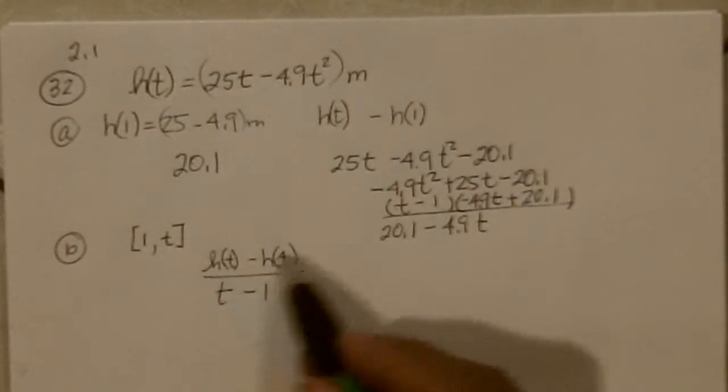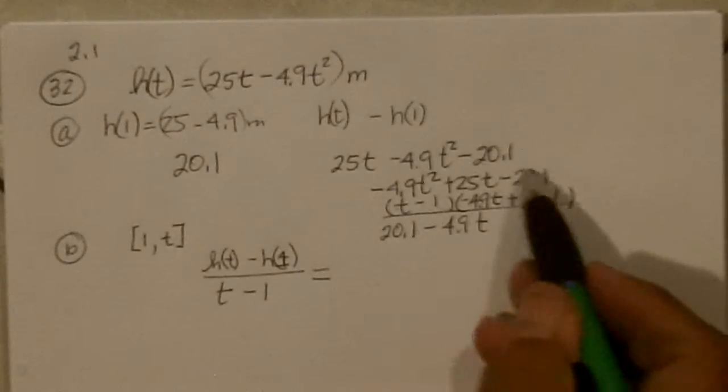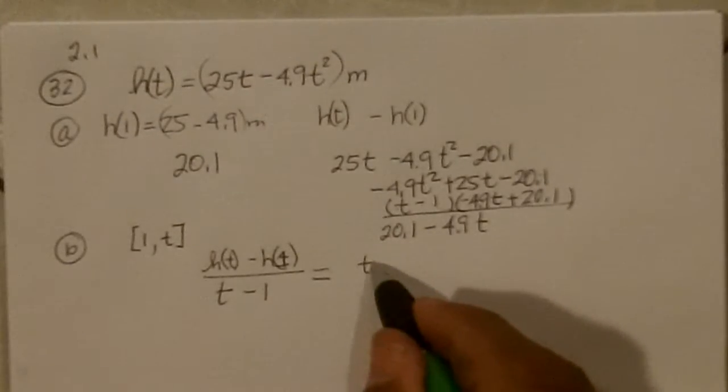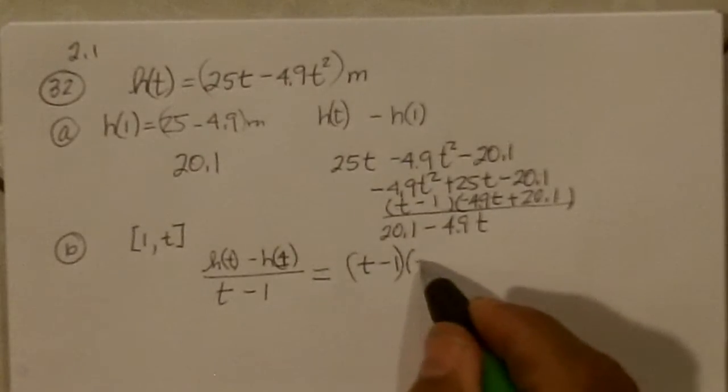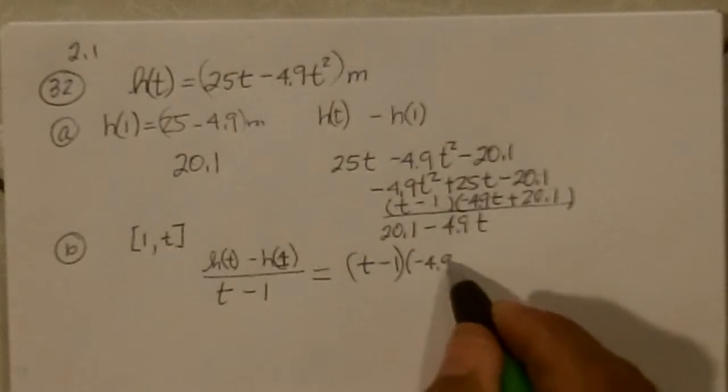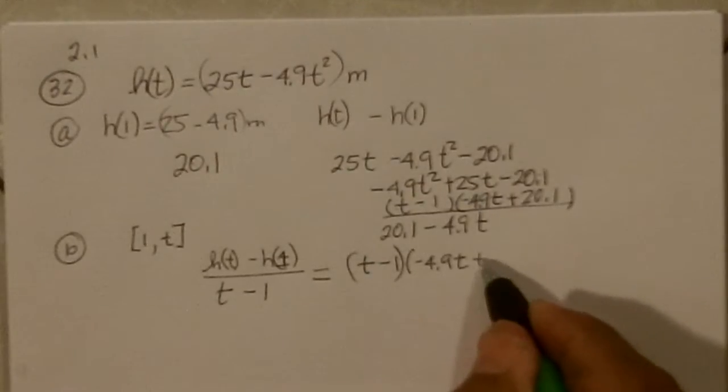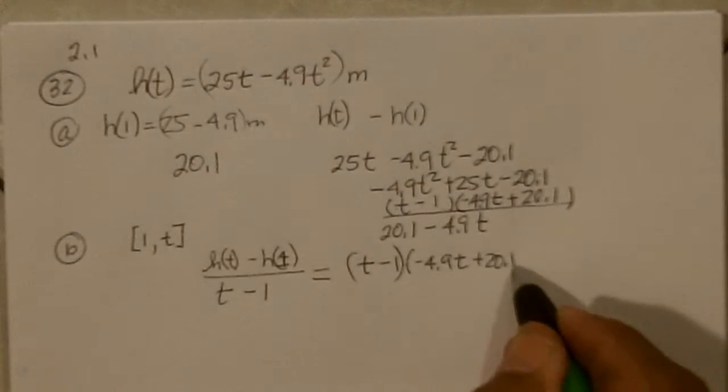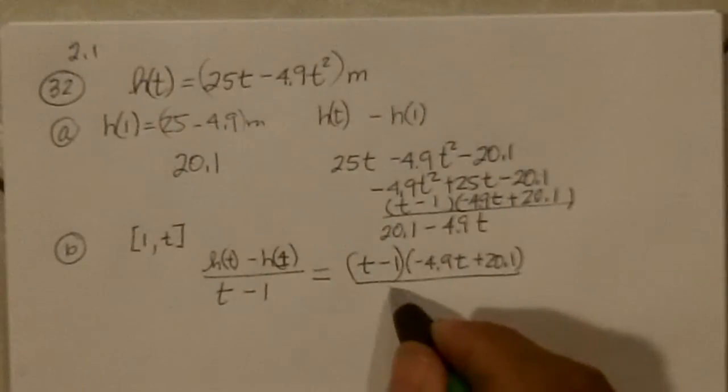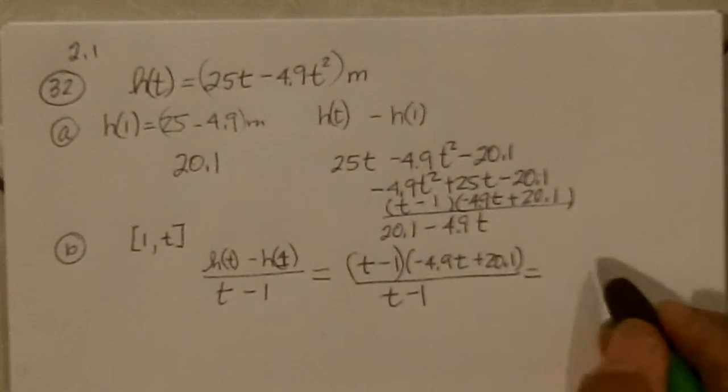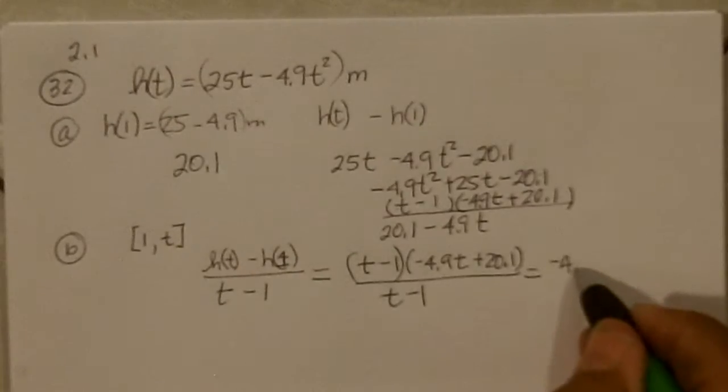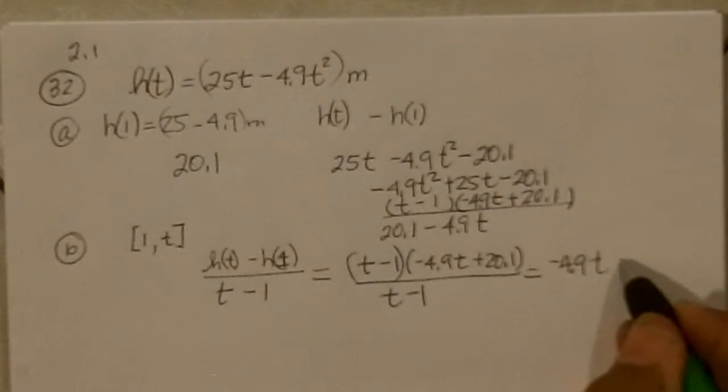Now, h(t) - h(1), we just figured out, was (t - 1) times (-4.9t + 20.1) divided by t - 1, which is -4.9t + 20.1.